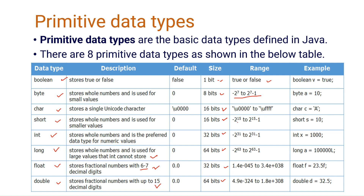For char and short with 16 bits, the range is from minus 2 to the power of 15 to 2 to the power of 15 minus 1. You can easily understand the range of each data type this way. For example usage: boolean stores true/false, char values must be in single quotes, long values must be suffixed with L, and float values must be suffixed with F.